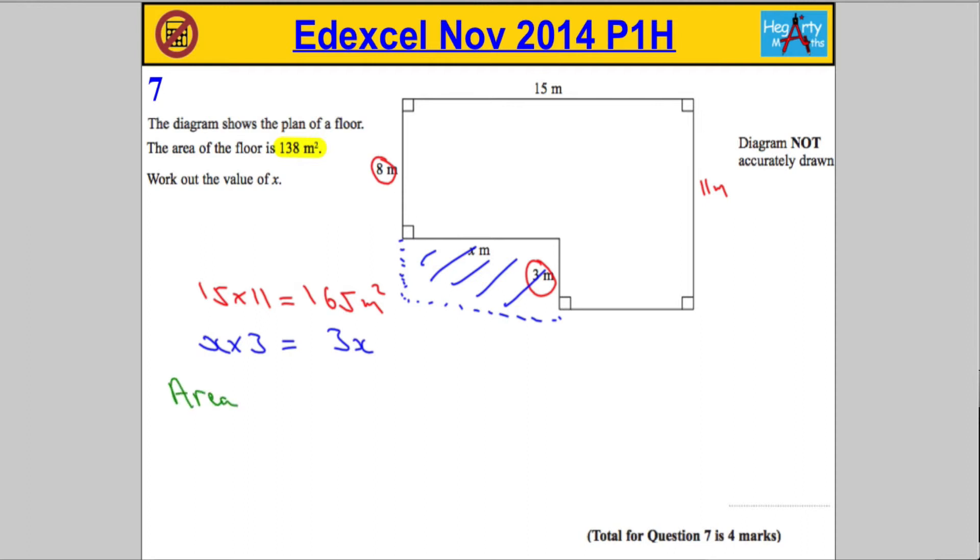So that means the total area, or the area of the shape given, must be the 165 subtract the 3x. But it also told me in the question that this area should be 138, so that must be equal to 138.